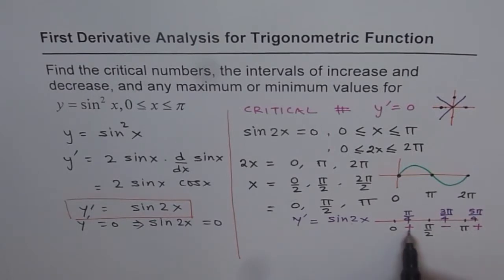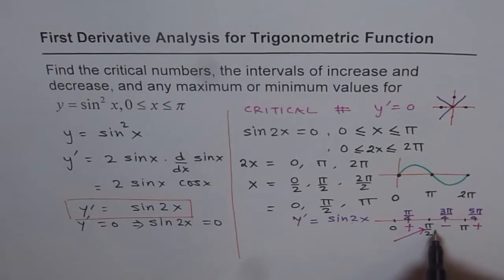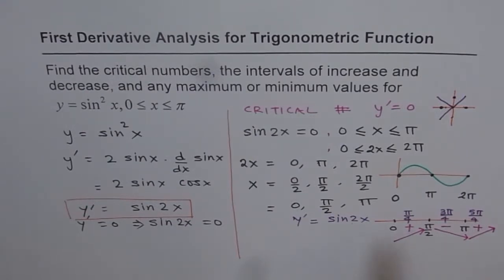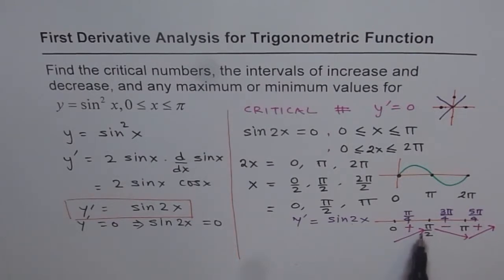If the first derivative is positive, the function is increasing. If it is negative, it is decreasing. So from 0 to pi over 2 the function is increasing, and from pi over 2 to pi it is decreasing.